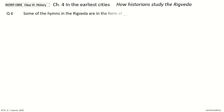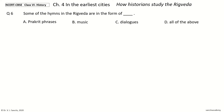Question 6 — last question. Some of the hymns in the Rig Veda are in the form of — the options are: Prakrit phrases, music, dialogues, or all of the above. Your time to choose. And the answer is dialogues. So, some of the hymns in the Rig Veda are in the form of dialogues.